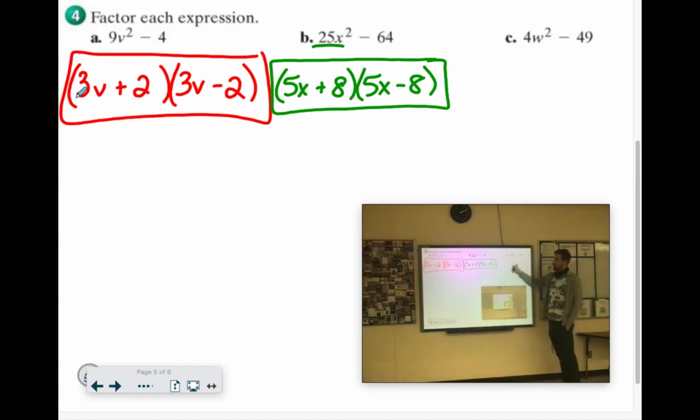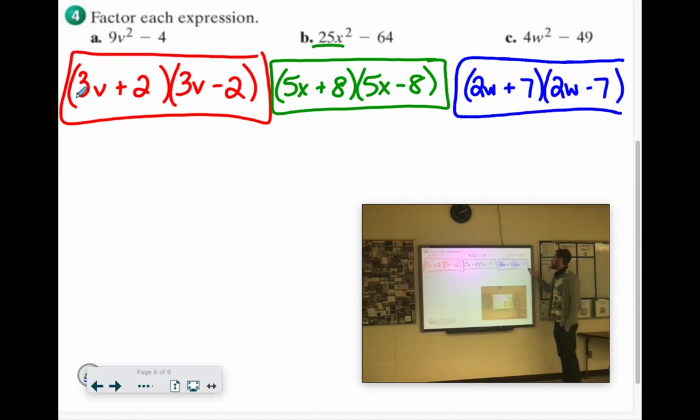Square root of 4w squared is 2w. Square root of 49 is 7. 2w plus 7, 2w minus 7.